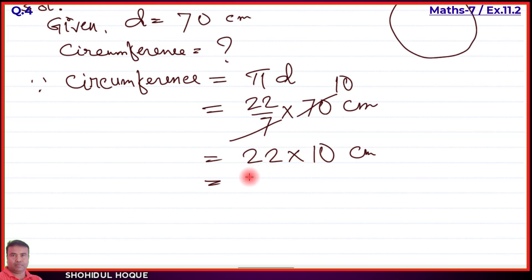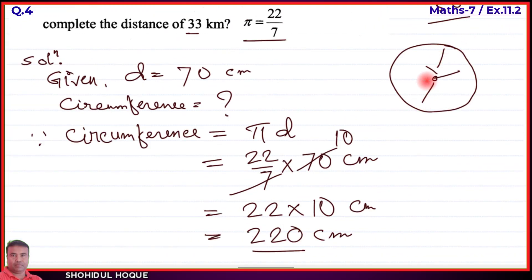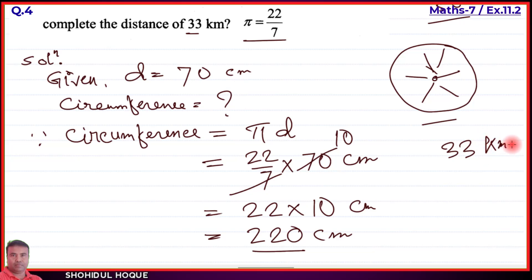So 22 multiplied by 10 gives 220 centimeter. Therefore the circumference of the wheel is 220 centimeter. This means in one rotation the wheel covers 220 centimeter.